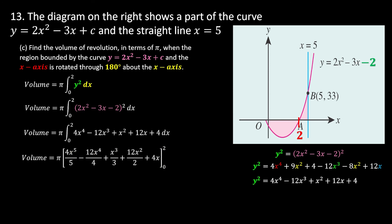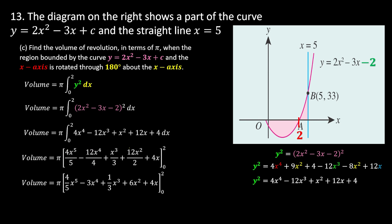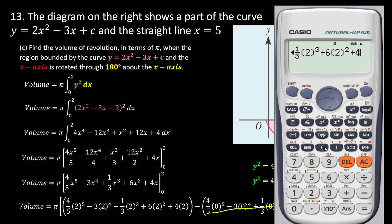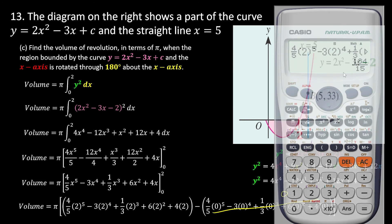We simplify first: taking out common factors where possible — 12/4 = 3, 12/2 = 6 — then substitute x = 2. Computing with a calculator gives the integrated value.